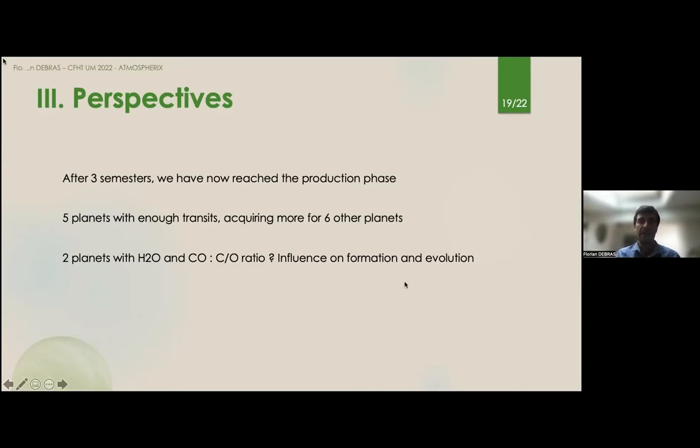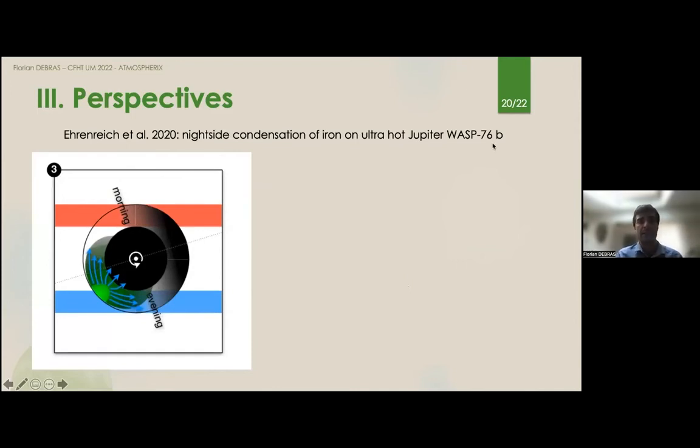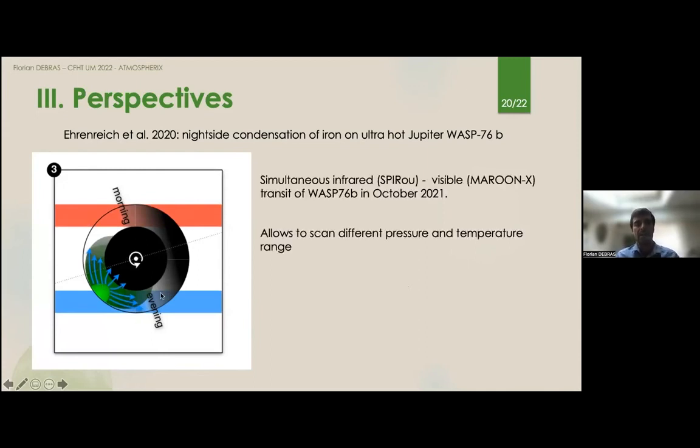Another really interesting aspect is that for WASP-76b, which I mentioned a lot, there are some theories that the evening part of the planet is much colder than the morning. And it leads to the fact that in the morning, the temperature is so hot that the iron is completely in a gaseous state, whereas it could condense back and form an iron cloud or be depleted in iron in the evening part. There are a lot of other explanations, but it has really been a shock to the community for this model.